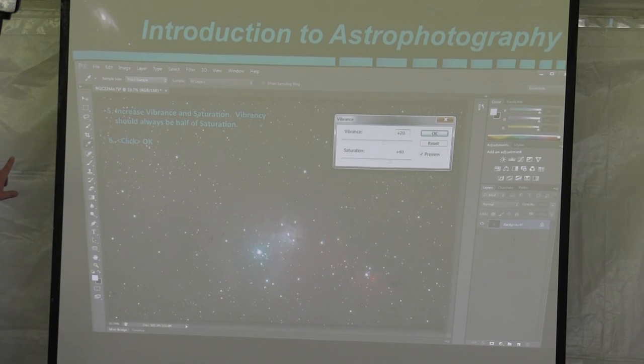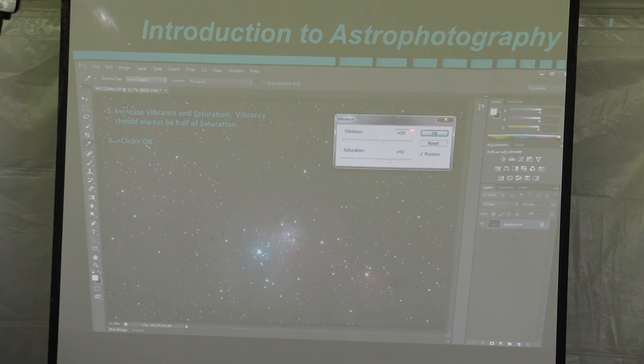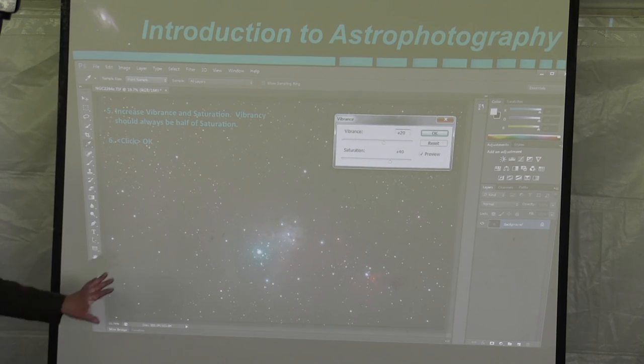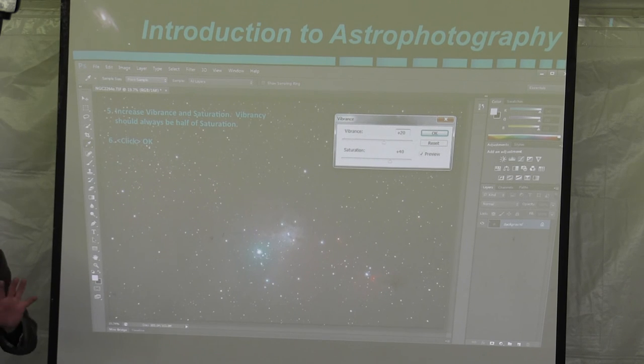The next thing to do is to increase your vibrance and your saturation. Your saturation is increasing the color that's already there. It's magnifying your color. If something's red, it's gonna make it redder. If something's blue, it's gonna make it bluer. There was data there, but it wasn't brought out yet. And the way you bring that out is by using your saturation. I recommend that if you increase the vibrancy by 20, you wanna make your saturation at 40.